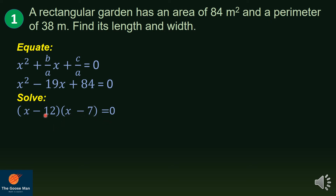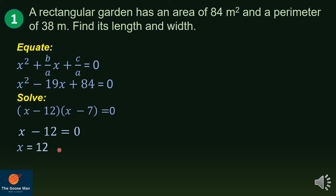By inspection: negative 12 times x gives negative 12x, while x times negative 7 gives negative 7x. Adding negative 12x and negative 7x gives negative 19x. So these are the correct factors of the quadratic trinomial x² − 19x + 84 = 0. Applying the zero property, x minus 12 = 0 gives x = 12, and x minus 7 = 0 gives x = 7.